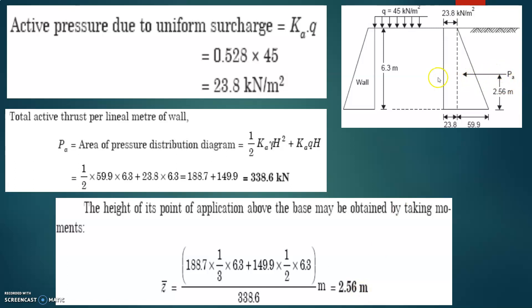So the total active earth pressure is acting at a distance of 2.56 meters from the base. The key step is to equate the total pressure times Z-bar with the moments of the individual pressure distribution diagrams — this gives you Z-bar. I hope all of you understood. Let us take one more example.